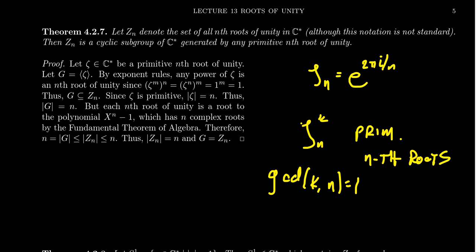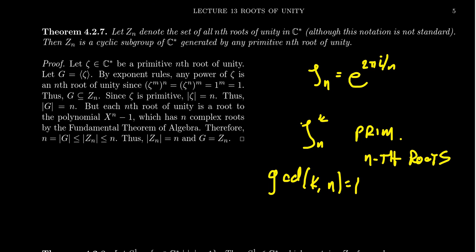We're going to define a set called Zn. Notice we're using a different font than the usual Zn we've been doing — the Zn with the blackboard font represents the congruence classes of integers modulo n. While in this situation Zn, which is a regular Z, we're viewing as a subset of the complex number system. Zn is going to be the set of all nth roots of unity inside of C star, and this is not a universal notation.